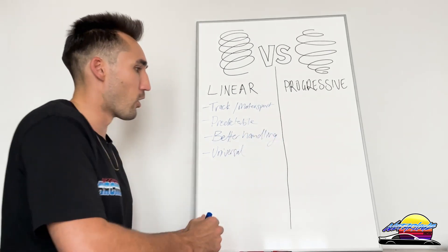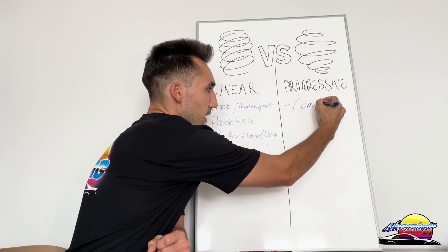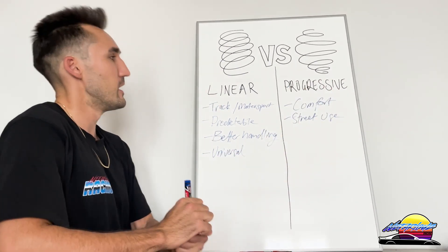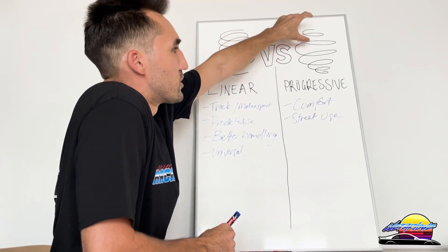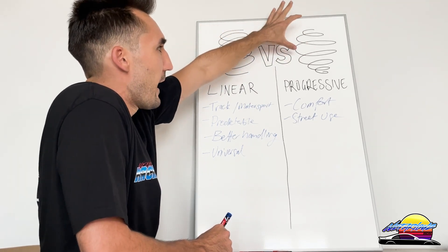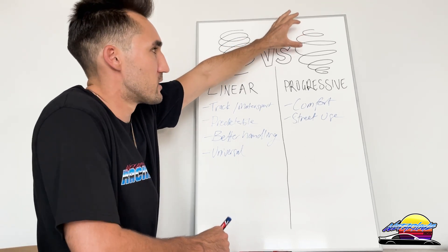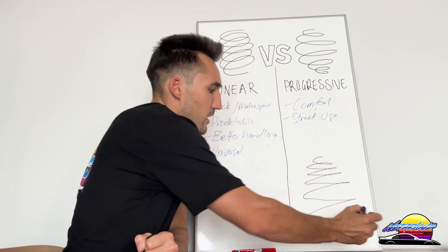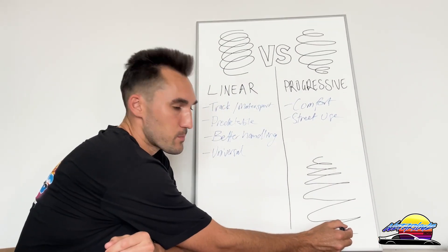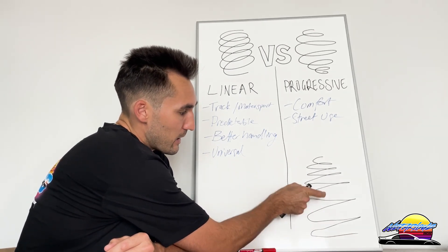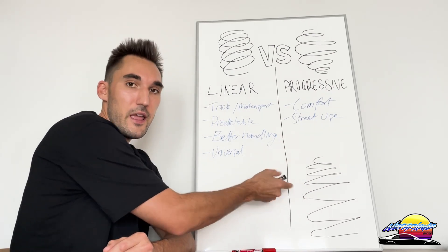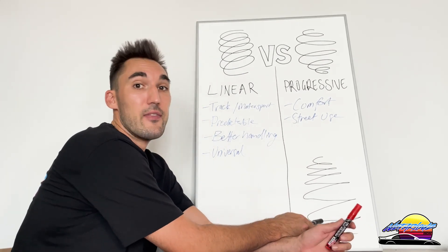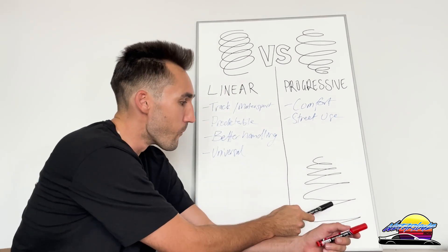Progressive springs are basically for comfort — they're usually used for street use. Due to the different gaps and different sections of the spring, what typically happens is you have a section that is softer to begin with and then as it continues compressing it gets harder. The coils start off closer together and get wider, so as the spring progresses it's softer at first but starts stiffening up. If you hit a bigger bump and it compresses further, it's now much stiffer — that's why it's called progressive, because as it compresses it gets progressively stiffer. A lot of factory springs look exactly like this.